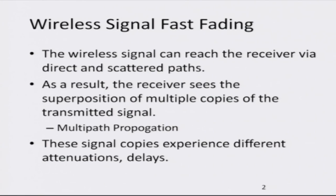As we have already seen in the very first module, the wireless communication environment is a very tricky and challenging environment because there is no dedicated channel or wire between the transmitter and receiver. So the signal can reach the receiver via several paths. As a result, what the receiver sees is really a superposition of several signals, and we know from physics that when these signals superpose they can end up cancelling each other or sometimes even adding up to enhance the signal strength. What you see is a variation of signal strength, and occasionally the signal dips severely below an acceptable level.